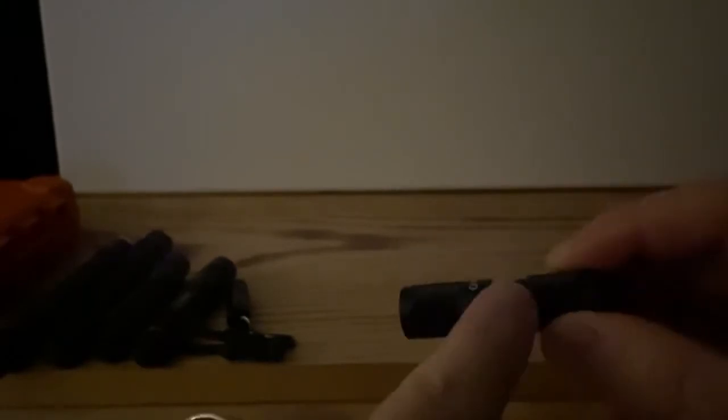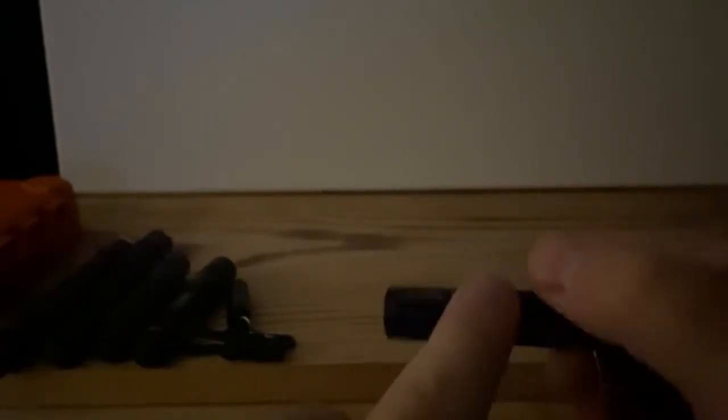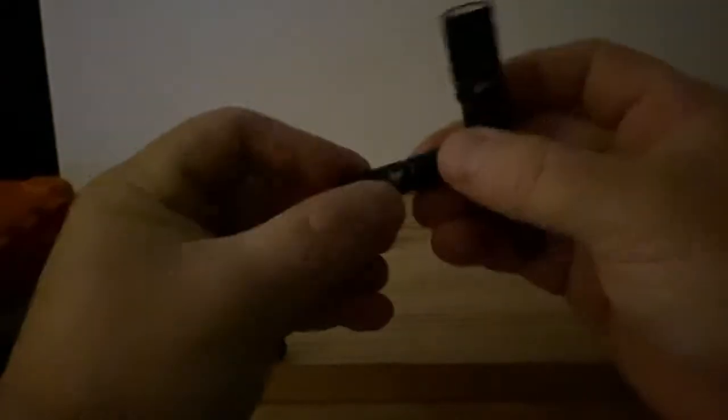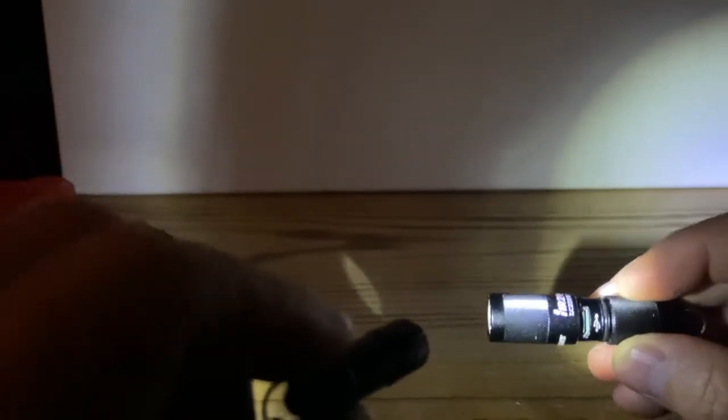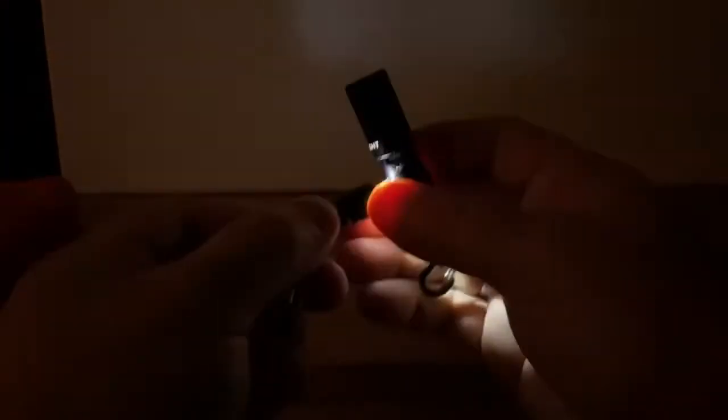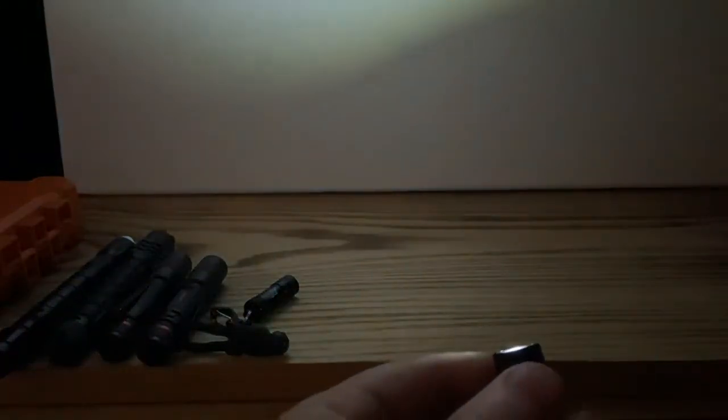This one, you twist it and it spring loads and pops out. Right in this light, you can see it right there, that's a USB-C charging port. So your O-Light goes dead on you, you just plug it into the USB and let it charge, and boom, you now have light again.